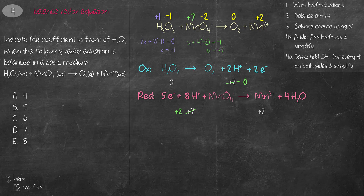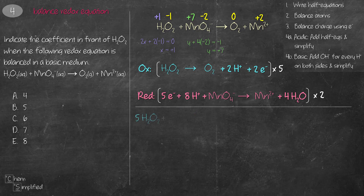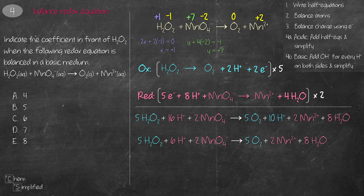Now we equate the number of electrons in both half equations. Oxidation has 2 electrons, reduction has 5 electrons. The common denominator is 10, so we multiply the oxidation half by 5 and the reduction half by 2. When we add both half equations together we can simplify the H+ that appears on both sides.